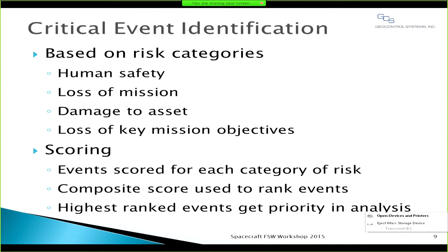Critical events are identified using risk consequence. Each significant mission event is scored based on the consequence of event failure. Scoring categories include human safety, loss of mission, loss or damage to assets, and loss of key mission objectives. The risk consequence across various categories is blended into a composite consequence score, which is used to rank mission events and identify the most critical ones. Those critical events become the candidates for IV&V analysis, and events with a greater composite score get greater priority analysis.